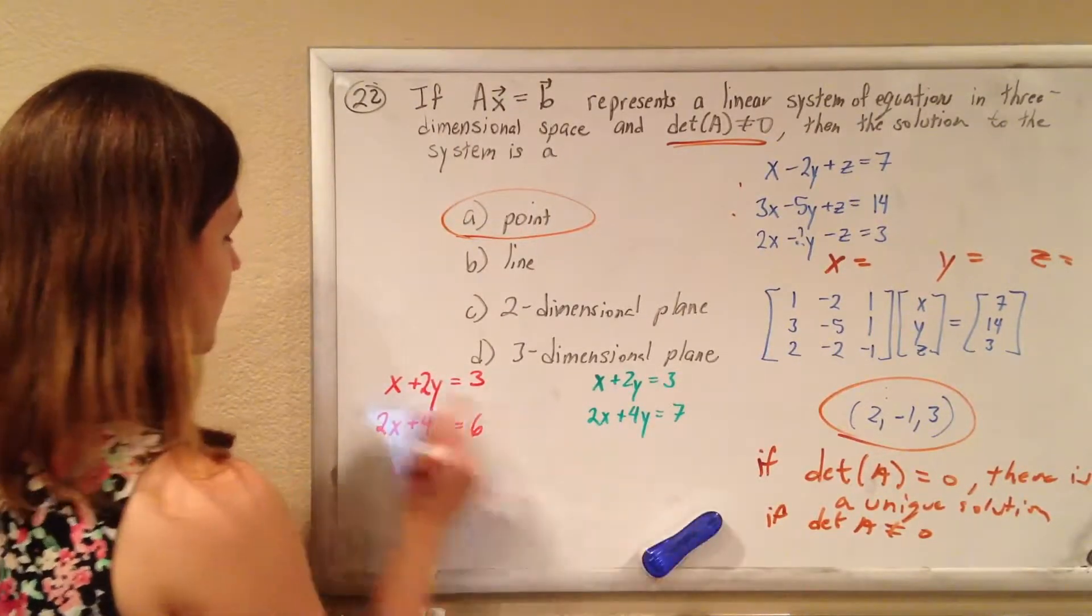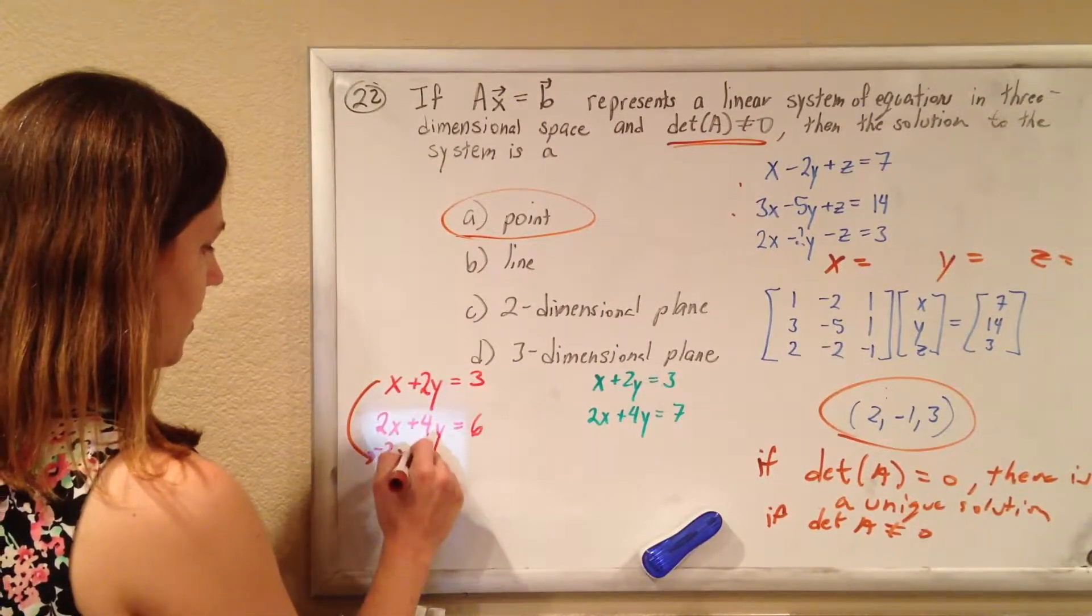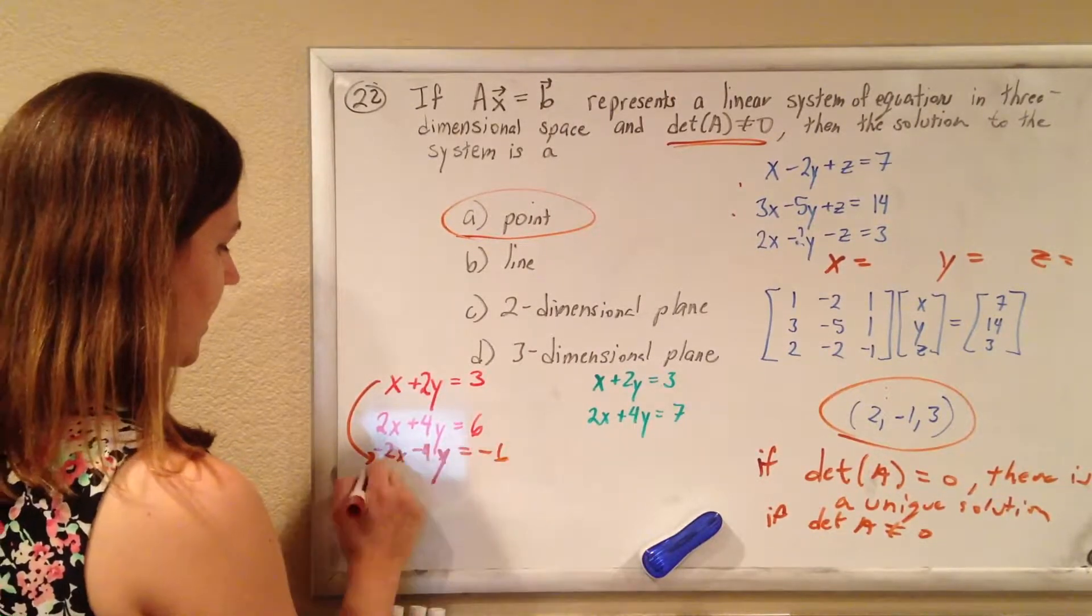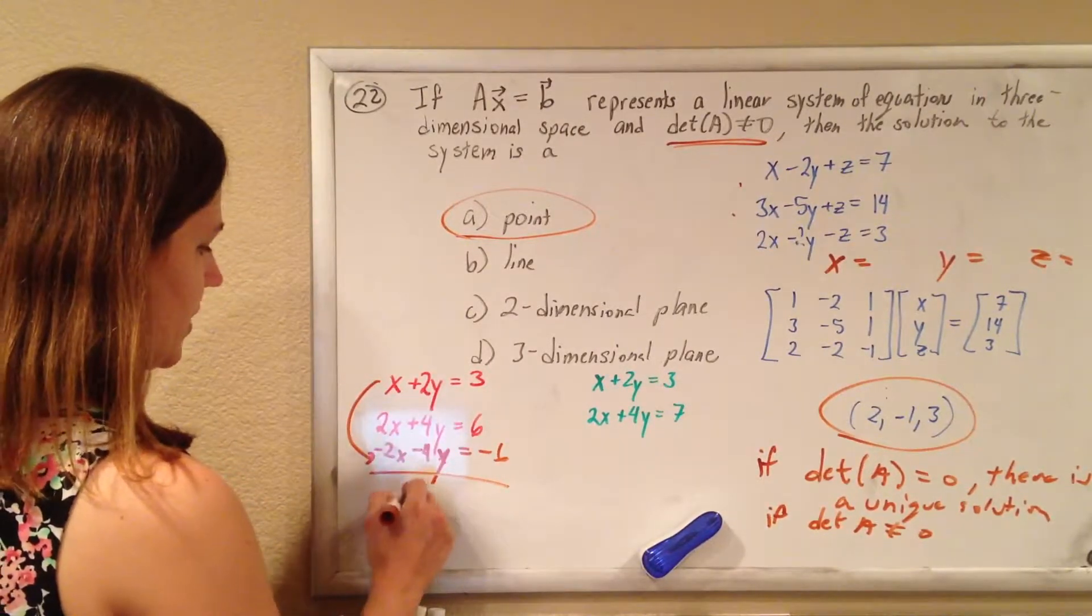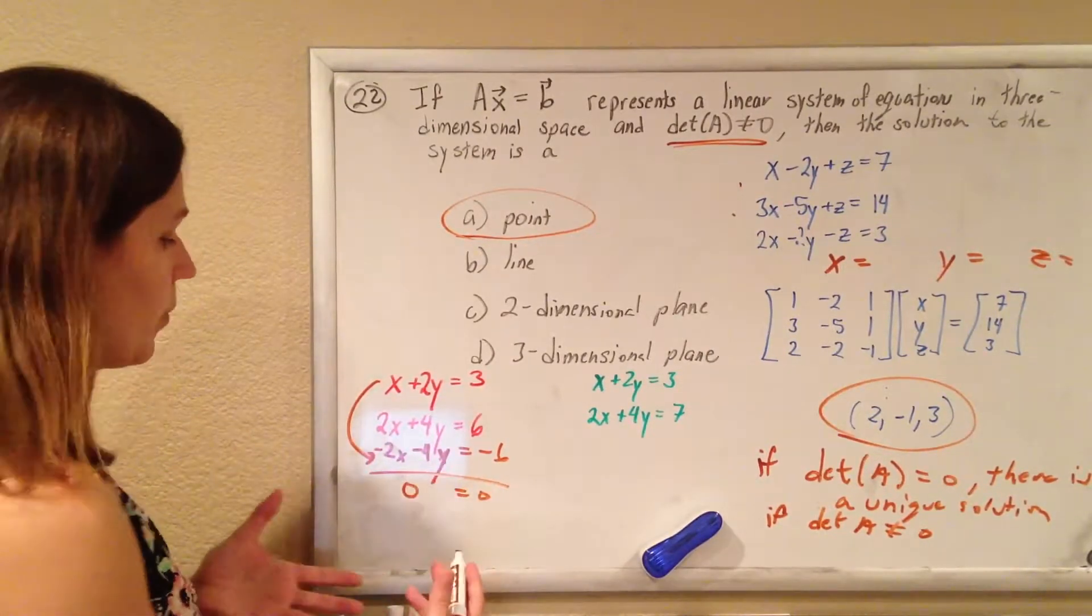if you were to multiply, say, this one by negative two, you'd get negative 2x minus 4y equals negative 6, and then you add them up, and you get zero equals zero, and you get that infinite number of answers.